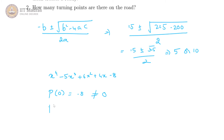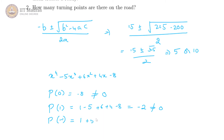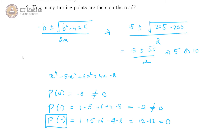Then we have p(1), which is 1 minus 5 plus 6 plus 4 minus 8, equal to 12 minus 14, which is not equal to 0, so not a root. Then we try p(−1) and we get 1 plus 5 plus 6 minus 4 minus 8, which is 12 minus 12 equals 0. So p(−1) gives 0, which means we have another root: minus 1. The roots we have found so far are 5, 10, and minus 1.